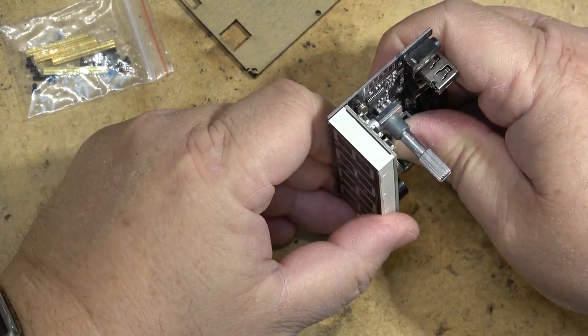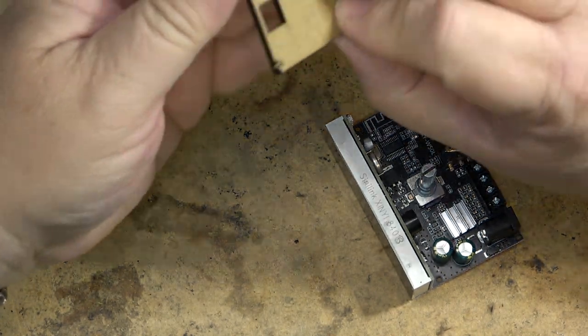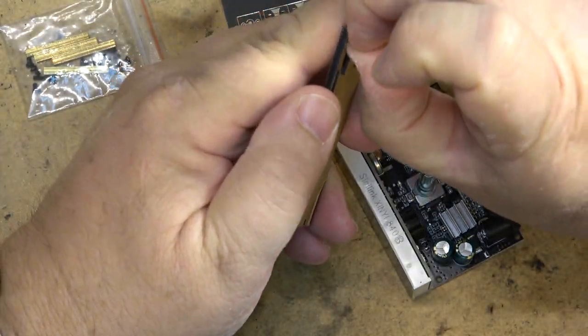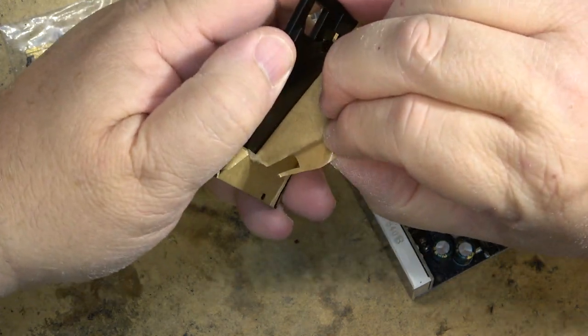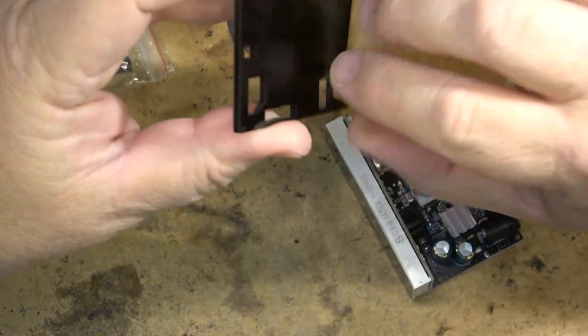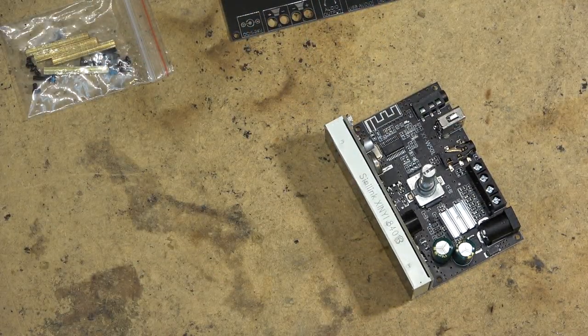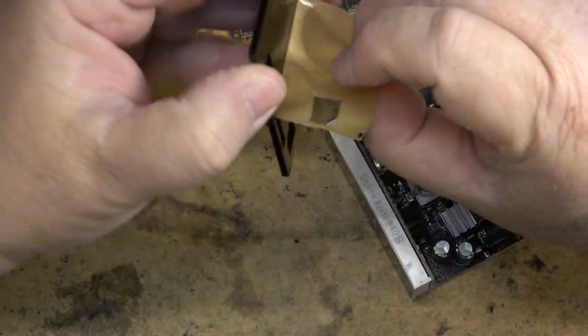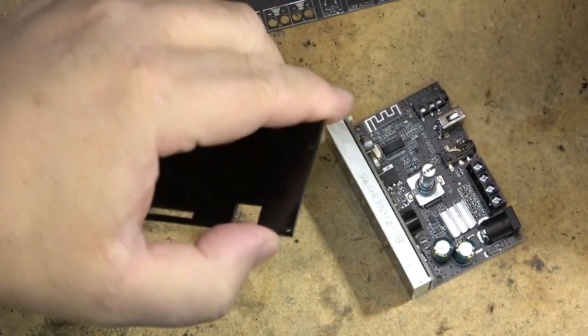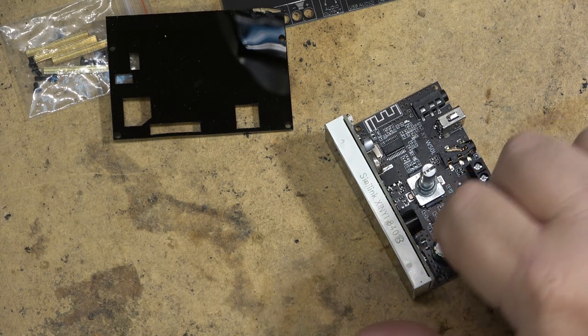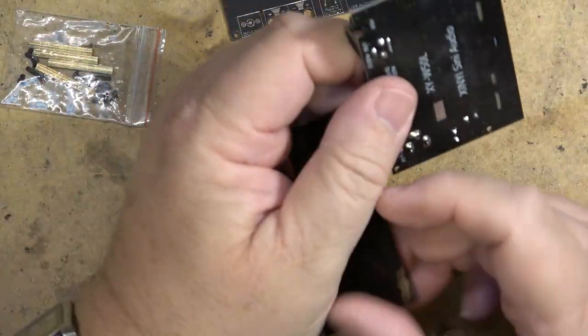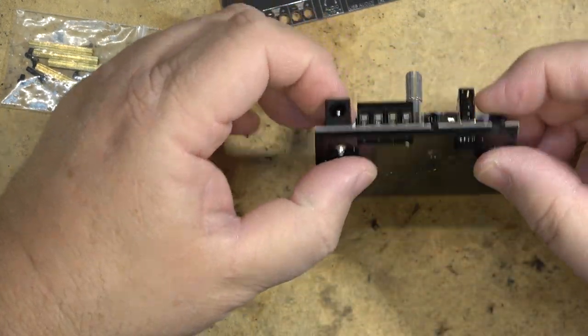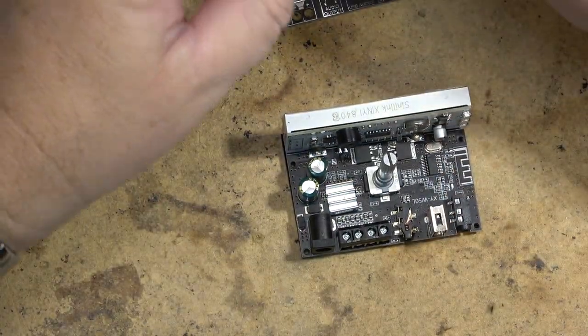We'll peel off the backing on this heat transfer adhesive and pop this down on top of this IC to provide cooling. We'll peel off the protective paper on the laser-cut cover and put it on. Perfect little kit for someone starting in electronics, looking for a simple project with no soldering required.